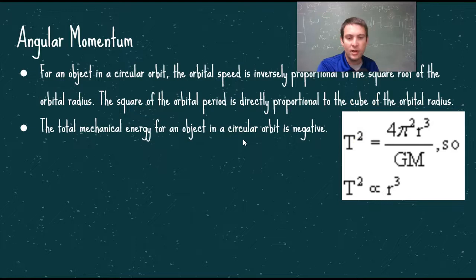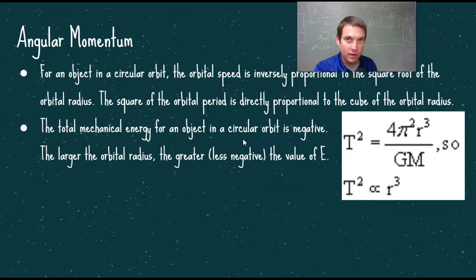The total mechanical energy for an object in circular orbit is negative. The further away you are from the object you're orbiting, the greater the value of your total mechanical energy will be, because the less negative your gravitational potential energy will be. Remember that if you have gravitational potential energy equal to zero, you are an infinite distance away. That's why it's negative GMm over r.